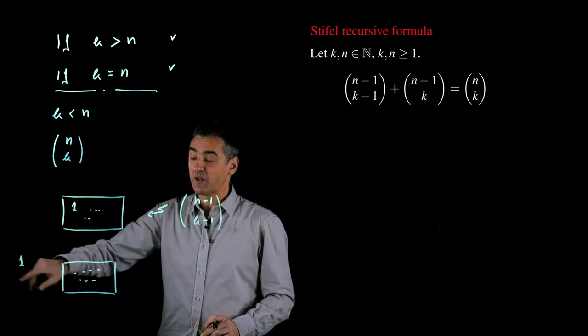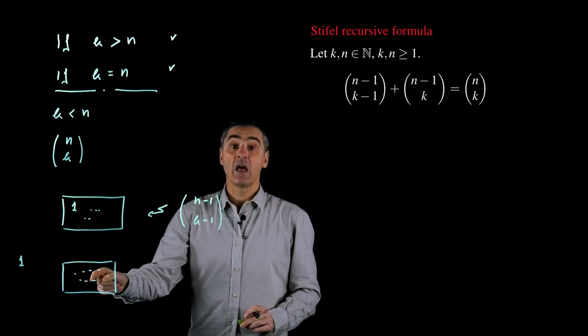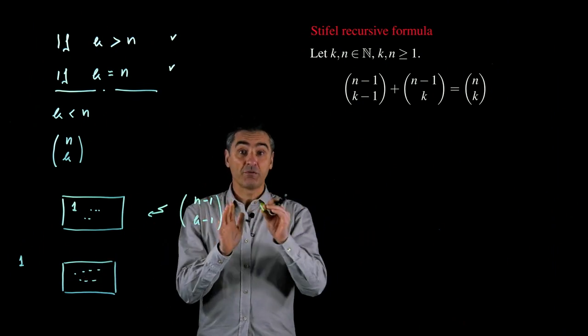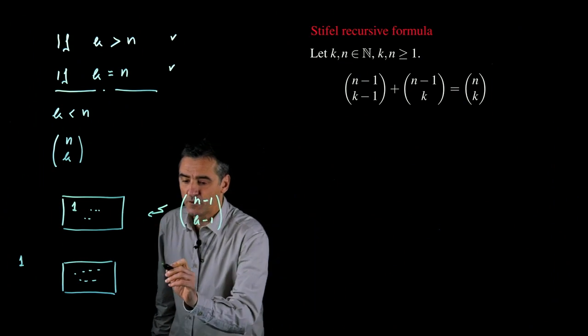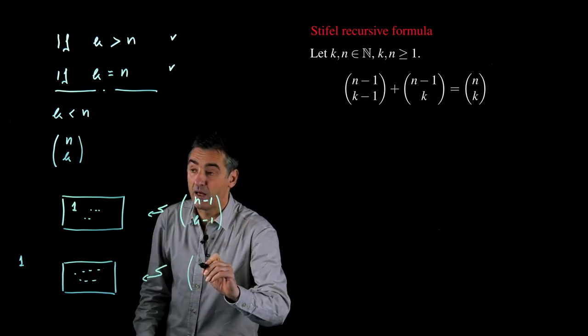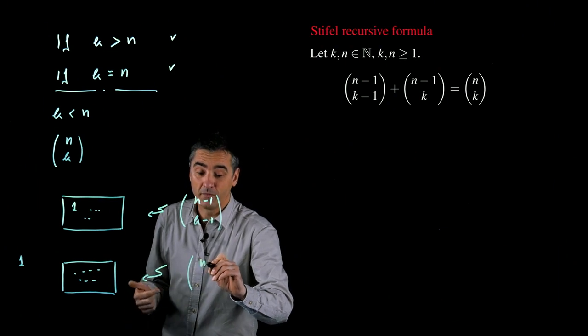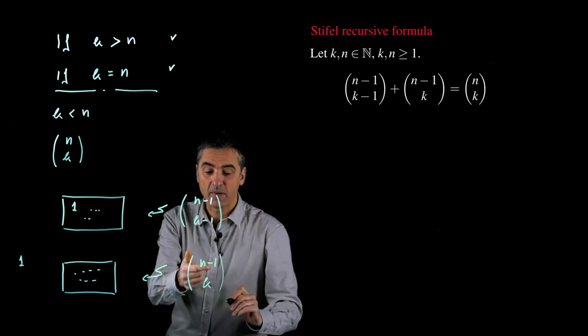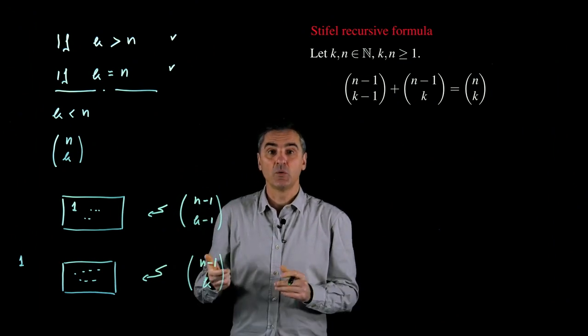You see, 1 is outside, therefore I have to choose k numbers among n minus 1 numbers. The numbers 2, 3, until n. Therefore, I can choose k numbers among n without 1 in n minus 1 over k ways.